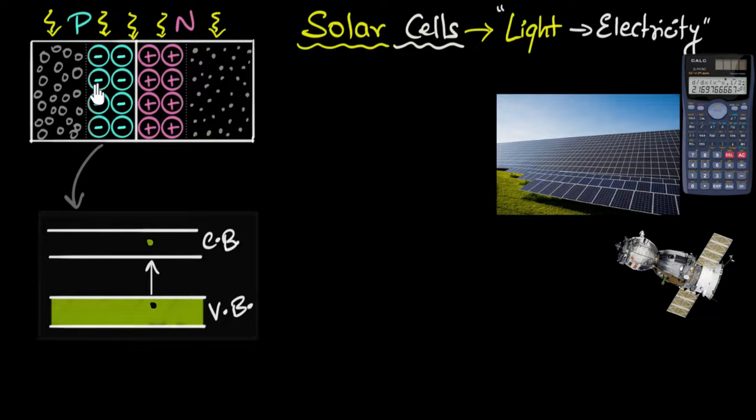However, when that happens inside the depletion region, that's when things get interesting. So imagine an electron hole pair is formed inside the depletion region. Let's say this is an electron, and this is the hole that is formed due to sunlight, due to the photons, light photons.